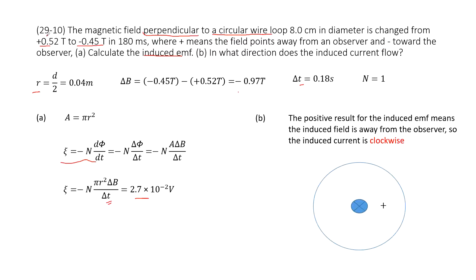Initially, the magnetic field is positive. This positive means it points away from the observer. So for us, when it points away, that means it flows in. Agree? Yes.